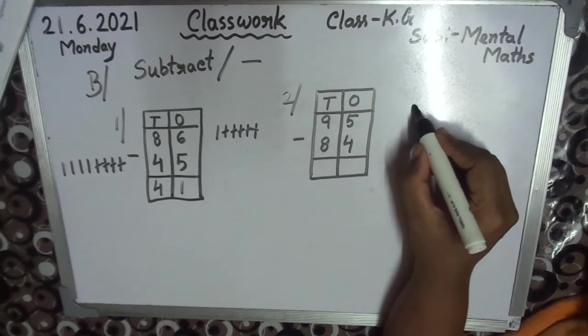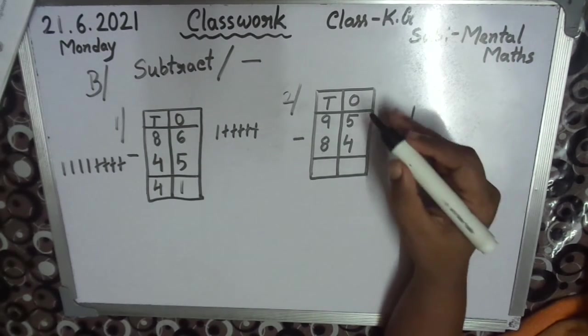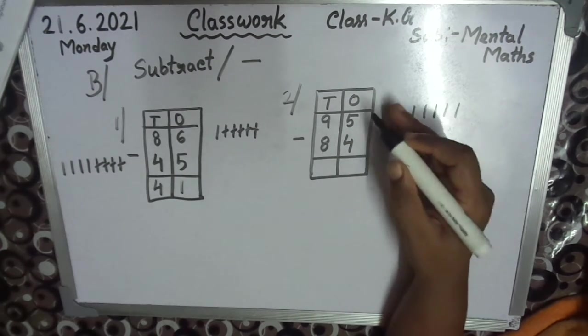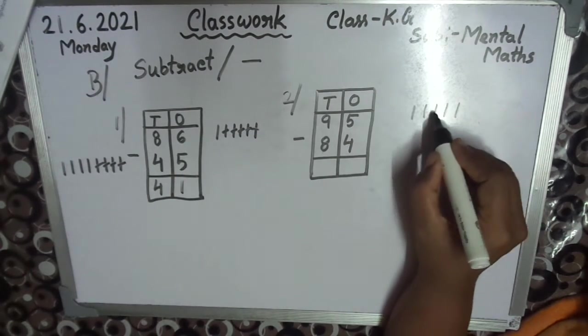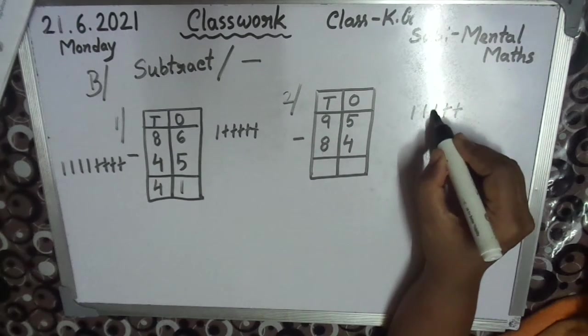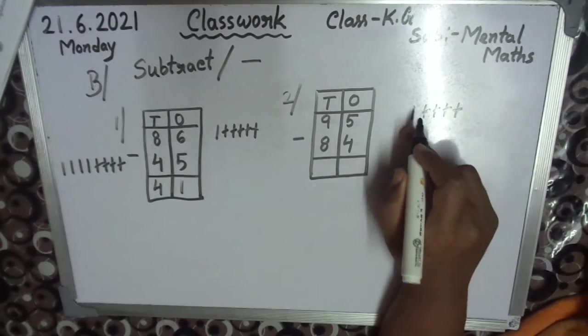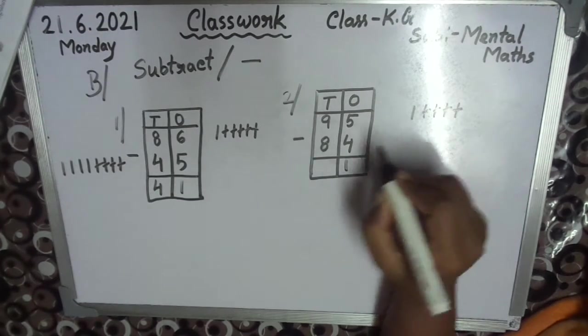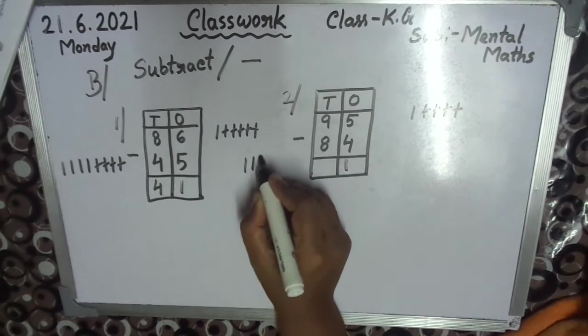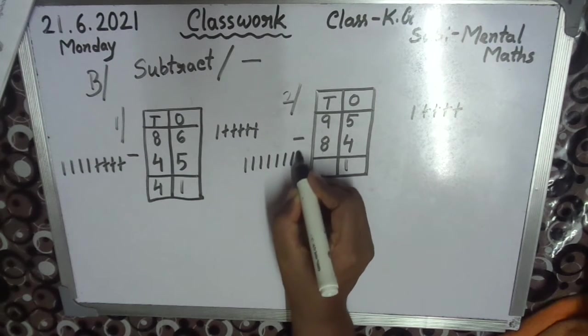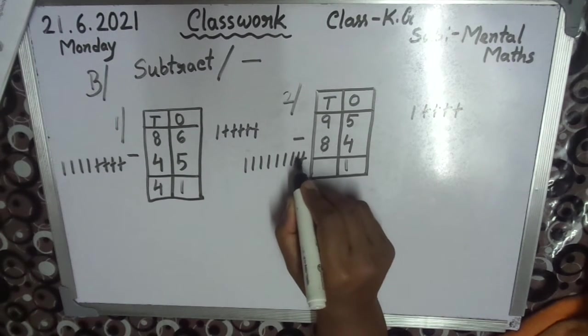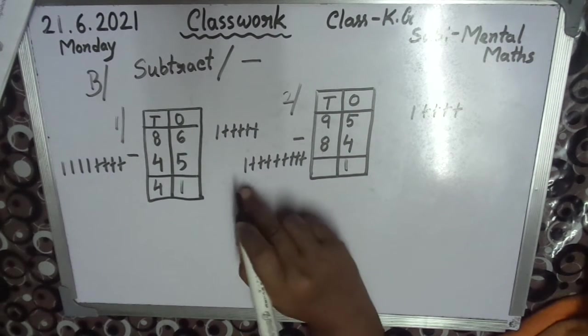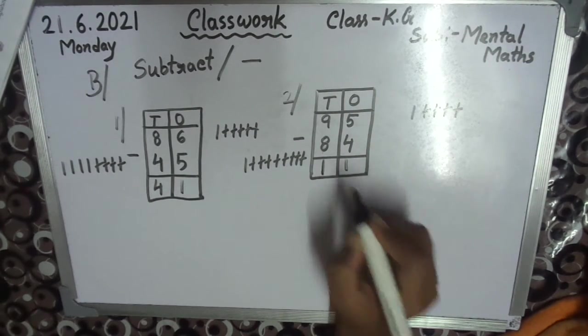Now children, draw. Ones column. 1, 2, 3, 4, 5. 4, take away, so 1 left. 9: 1, 2, 3, 4, 5, 6, 7, 8, 9. So 1. 8: 1, 2, 3, 4, 5, 6, 7, 8. So left 1.